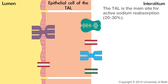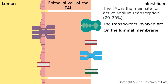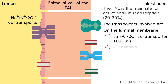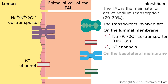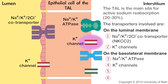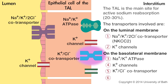The thick ascending limb is the main site for active sodium reabsorption. On the luminal membrane, the transporters involved are the sodium-potassium chloride cotransporter and potassium channels. On the basolateral membrane, the transporters involved are the sodium-potassium ATPase, potassium channels, the potassium-chloride cotransporter, and chloride channels.